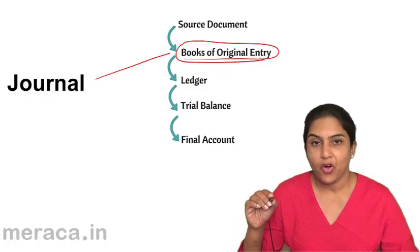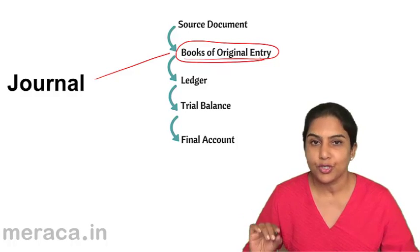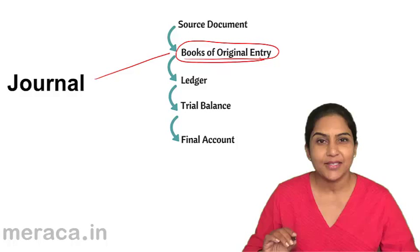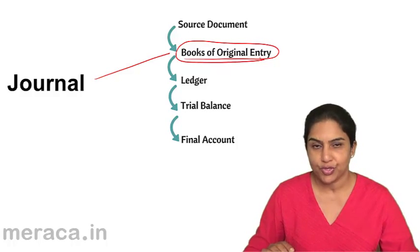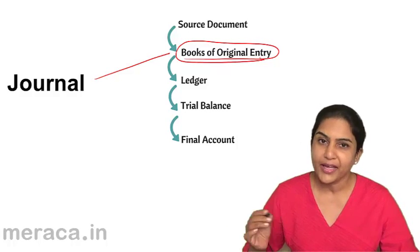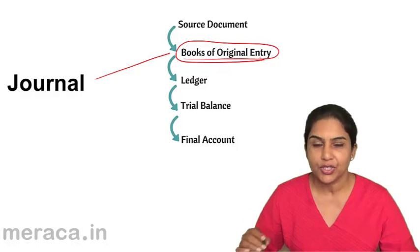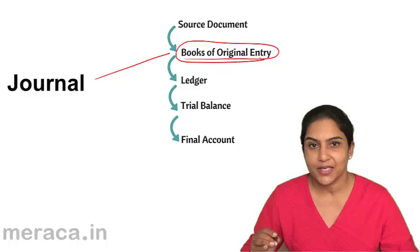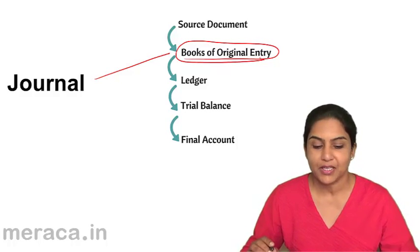Now, we have already discussed the rules of journalizing, both traditional approach as well as accounting equation approach. We can follow either method. Our entries will be the same. So we know how to pass entries, but where is this entry passed? It is first passed in the journal.